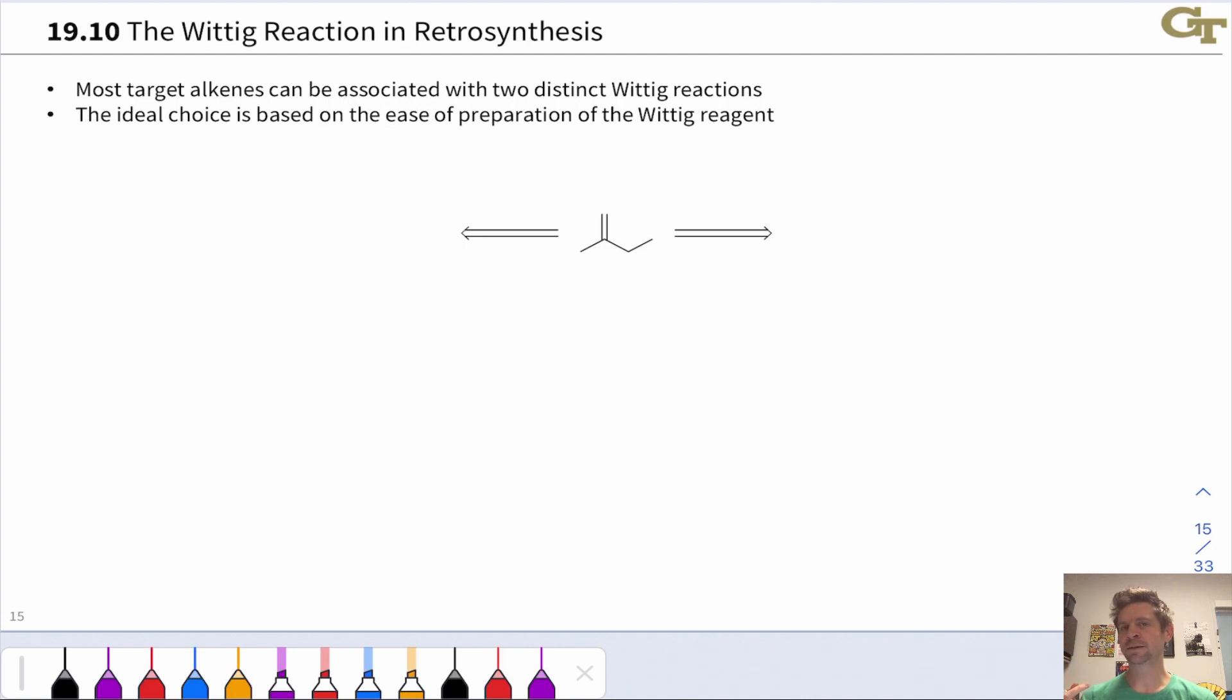This can typically be done in two distinct ways for most alkenes, depending on which side of the alkene, which carbon involved in the carbon-carbon double bond, we want to call the carbonyl group.